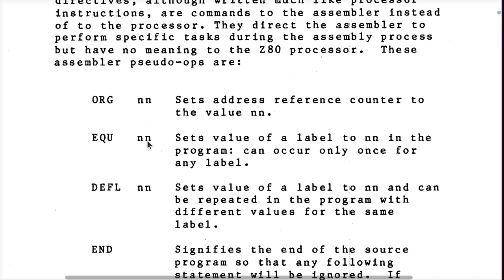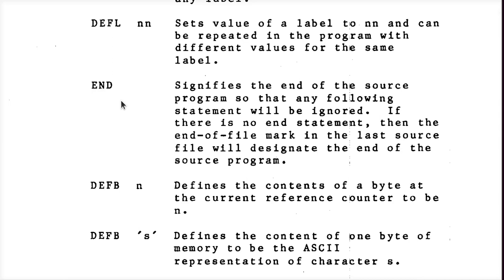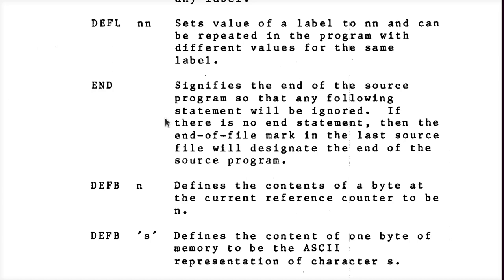Equate allows you to assign a numeric constant to a label — it lets you create a symbolic name like 'reg_clock' equated to a binary or hex value, and then use that label instead of writing the number down every time. DEFL — I've never used this in my life. It looks like it's equivalent to just putting an equate in there. I'll save the digression about the week of time I lost trying to figure out what this thing does on the EDTASM on a TRS-80, because that manual doesn't tell you anywhere how to properly use it.